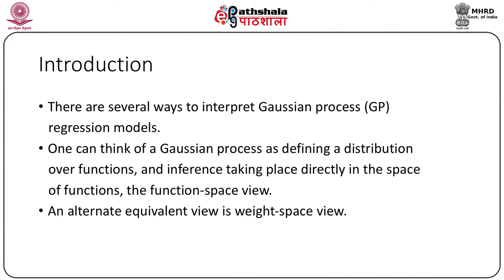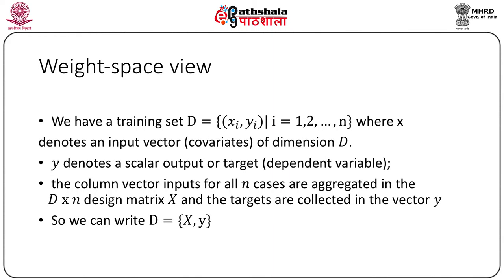There are several ways to interpret Gaussian process regression models. One can think of a Gaussian process as defining a distribution over functions and inference taking place directly in the space of functions, which is called the function space view. An alternate equivalent view is the weight space view, which we will now describe.